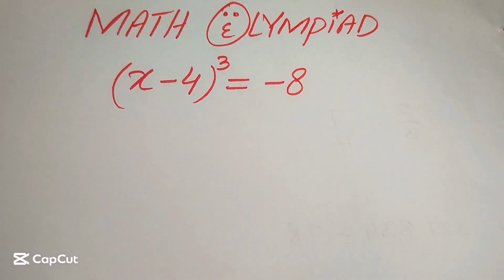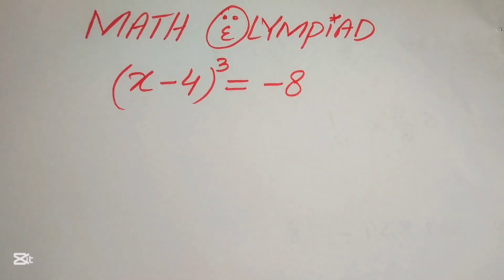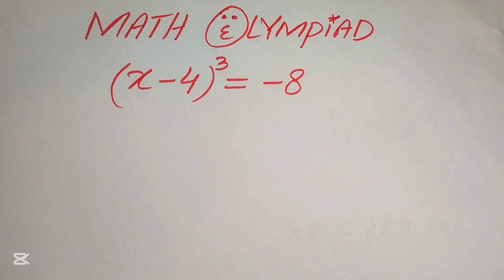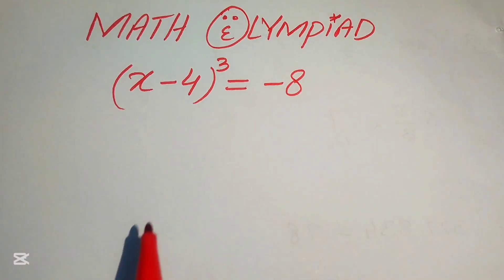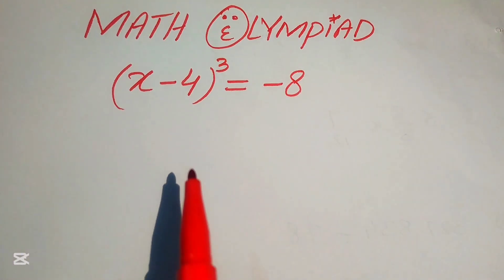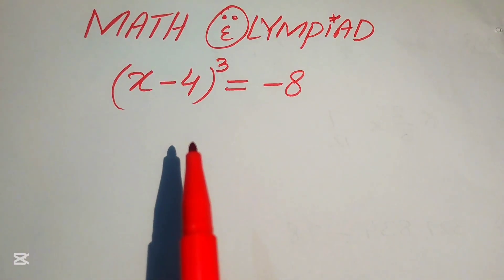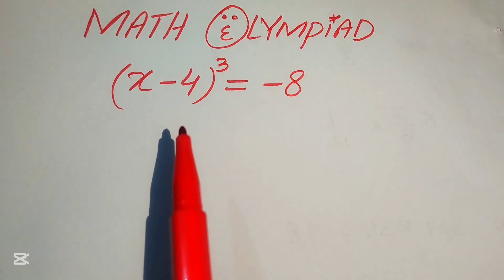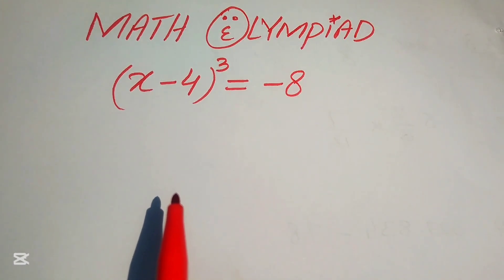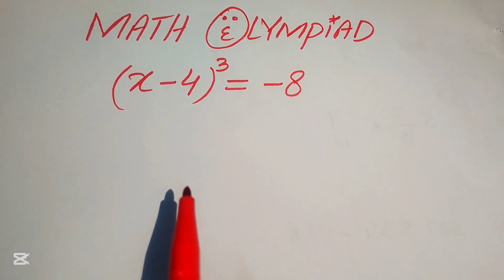Hello everyone, welcome. We solve this algebra problem: (x - 4)³ = -8. We need to find the values of x. The highest exponent is 3, which means this equation has three roots, so we need to find all three roots.